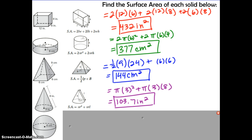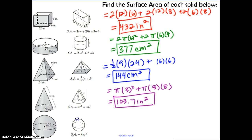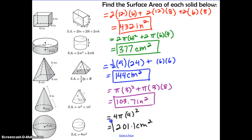Finally, we have the sphere. The sphere only has one measurement. Find the sphere on your formula sheet and substitute in the radius: 4 times pi times the radius squared. Putting that into the calculator gives 201.1 centimeters squared.